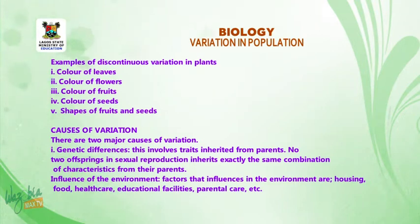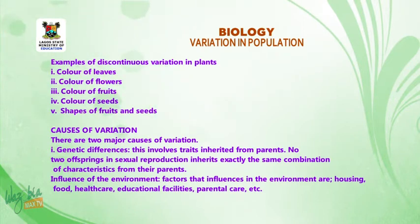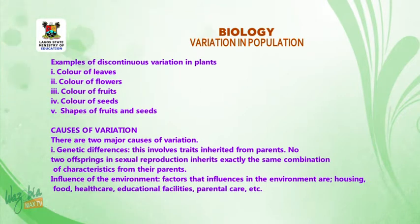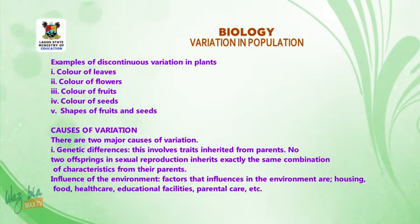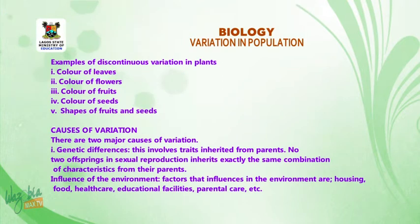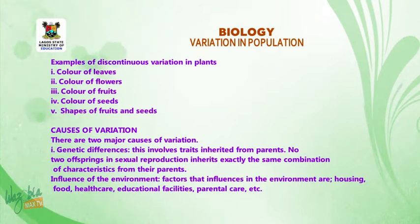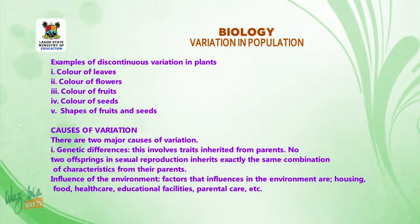Causes of variation. There are two major causes of variation: 1. Genetic differences — this involves traits inherited from parents. No two offspring in sexual reproduction inherit exactly the same combination of characteristics from their parents. 2. Influence of the environment — factors that influence the environment are housing, food, health care, educational facilities, parental care, etc.